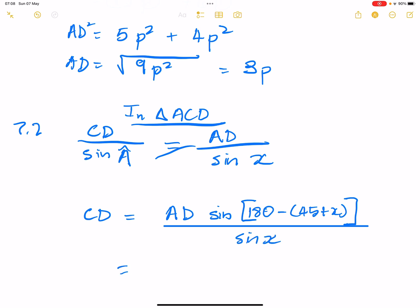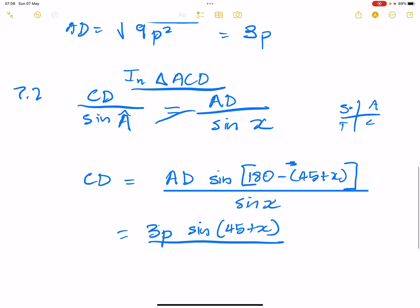So let's try and have a look at it. We already know that AD is 3P, so I'm going to try and substitute all that I know. Now we're going to use our reduction formula here. Sine of 180 minus, remember that's in the second quadrant. So our cast diagram tells us that sine is positive there. So why don't I just reduce this to sine of 45 plus X divided by the sine of X.